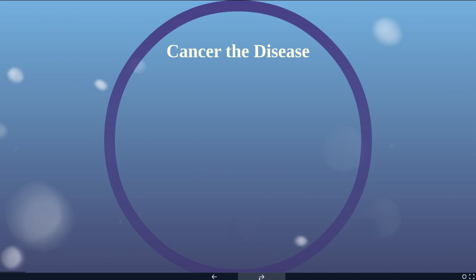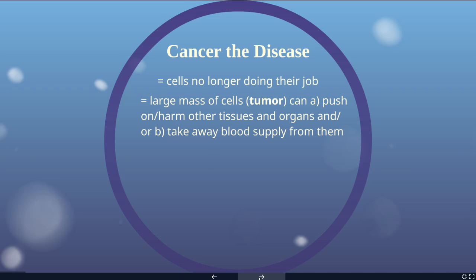Looking at cancer as an actual disease, this is the result to your body when your cells are no longer doing their job. If you have one or two cells not doing their job, you may not feel any side effects. But if you have a large mass of cells that have stopped producing insulin or stomach acid, you'll have significant side effects. In addition, a large mass of cells can push on and harm other tissues or organs, and can steal blood supply and nutrients away from necessary tissues.